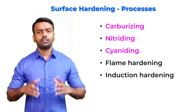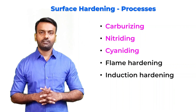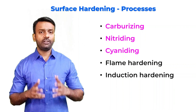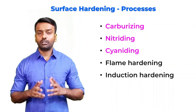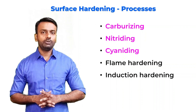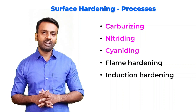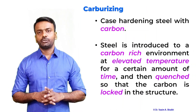Hello friends, in today's video we will be talking about surface hardening processes. I am Dr. Wasim Sheikh. There are many different types of surface hardening processes like carburizing, nitriding, cyaniding, flame hardening, and induction hardening. In today's video we will be talking about carburizing, nitriding, and cyaniding. In upcoming videos on my channel, we will talk more about flame hardening and induction hardening. Let us start with carburizing.